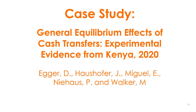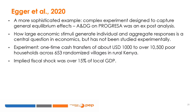We can also look at this type of effect in other settings. We will cover a paper called "General Equilibrium Effects of Cash Transfers," which presents a more sophisticated example of measuring spillovers. This is a complex experiment designed specifically to capture general equilibrium effects. The American Economic Review paper on PROGRESSA was an ex-post analysis — the idea of capturing indirect effects was not built into the program's evaluation but was examined ex-post by those authors.